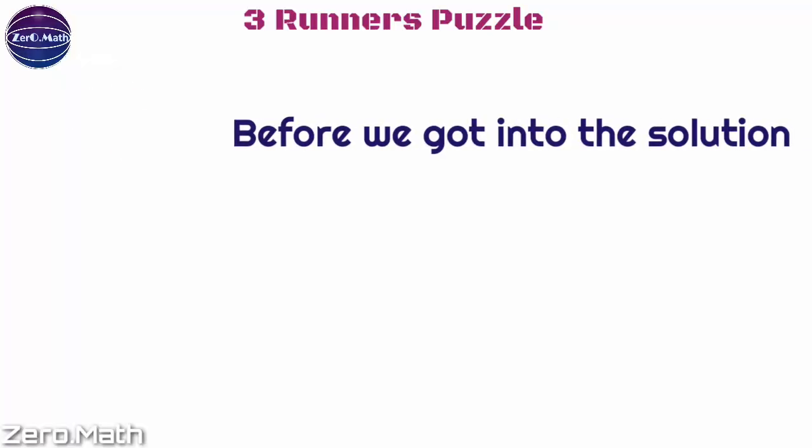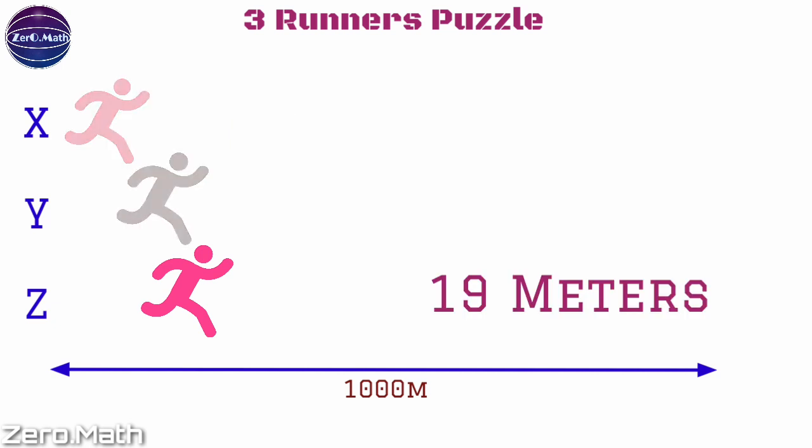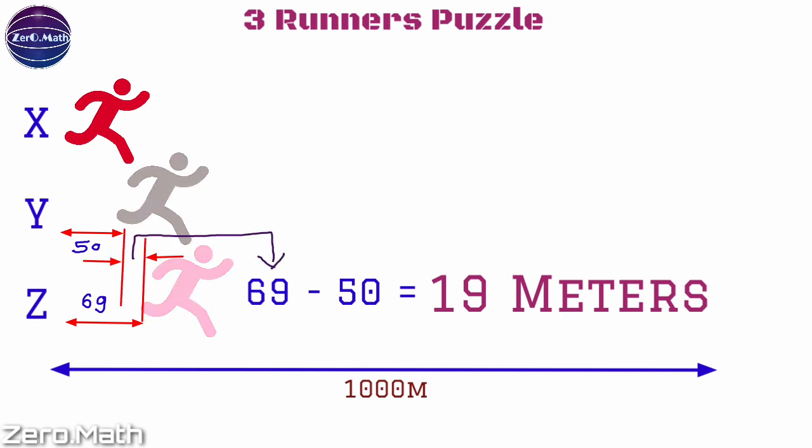Let me tell you that most people will give an answer of 19 meters, because X gives Y a start of 50 meters and X gives Z a start of 69 meters, hence if we compare Y and Z there is a difference of 19 meters. However, this is the wrong answer.